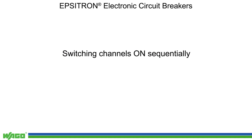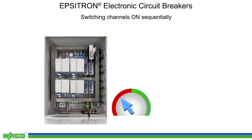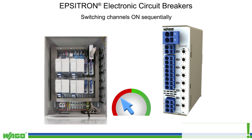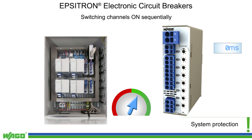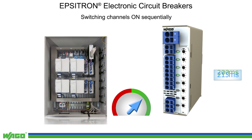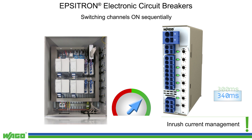Furthermore, WAGO's ECBs provide a better inrush current distribution. When an input voltage is applied to the ECB, the device will sequentially switch on the inputs with a delay time depending on the actual current. This eliminates the need to significantly oversize the system's power supply.